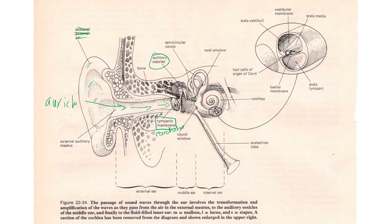The snail-shaped structure is for the sense of hearing. Looking at a cross-section, there's bone on the outside and a chamber on the inside. That inner chamber is where the organ of Corti is housed.